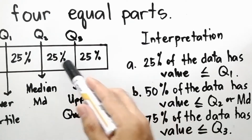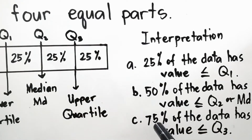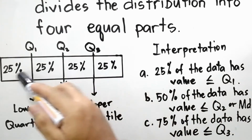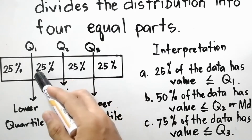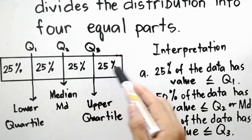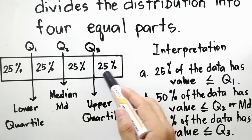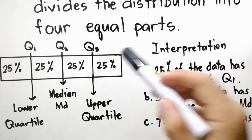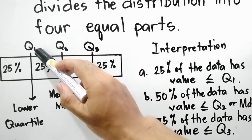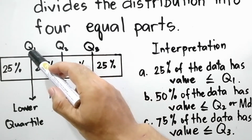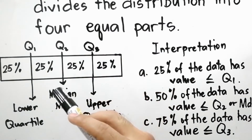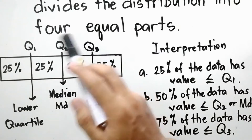For Q3, the interpretation is 75 percent of the data has a value less than or equal to Q3, since 25 + 25 + 25 equals 75 percent; or 25 percent is greater than or equal to Q3. The difference between the third quartile (Q3) and the first quartile (Q1) is called the interquartile range. The formula is: interquartile range = Q3 minus Q1.